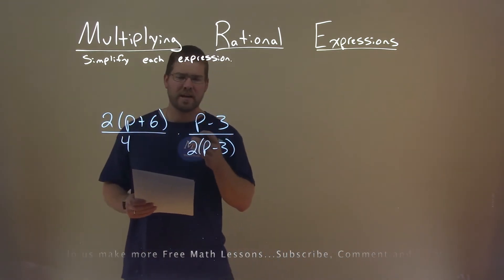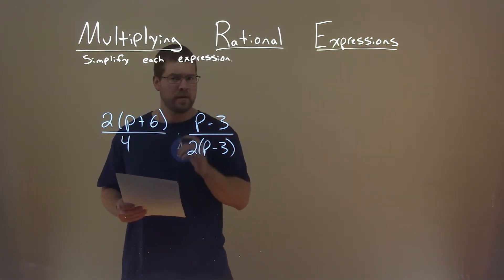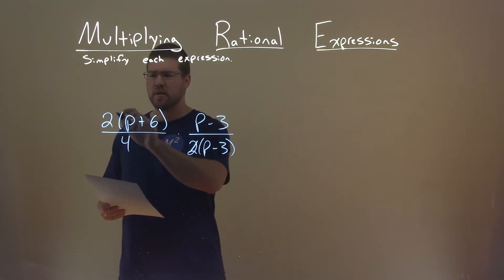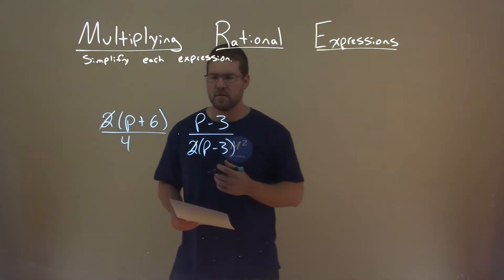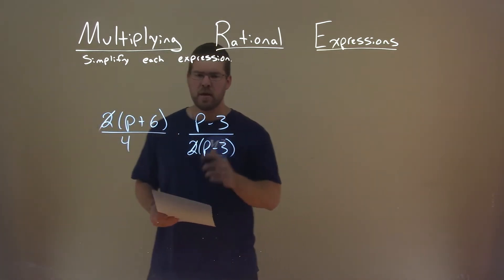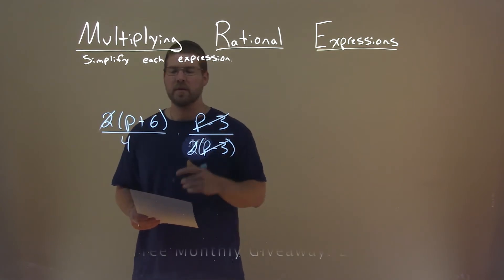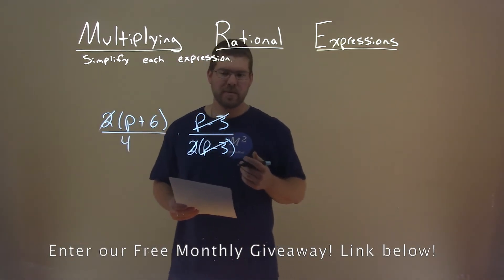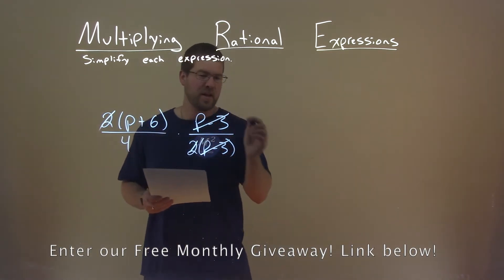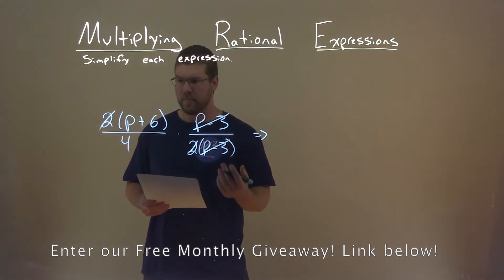I try to find things that I can cancel out from the numerator and the denominator. There's a 2 here and a 2 here — they cancel each other out. p minus 3 and this p minus 3 cancel each other out. And there's really nothing else left over that I can cancel out.